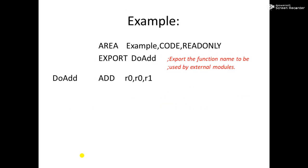Here is an example of the EXPORT directive. We begin with the AREA directive, give the section name as 'example', set the attribute to CODE with READ-ONLY. Then we write the EXPORT directive and mention the symbol name — in this case 'do_add', which is a function name being exported and used in the current program.